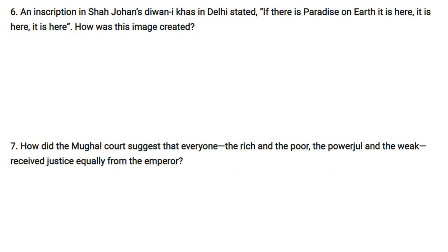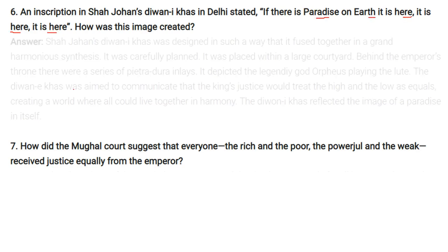An inscription in Shah Jahan's Diwan-i-Khas in Delhi stated: 'If there is a paradise on earth, it is here, it is here, it is here.' This image was created because the Diwan-i-Khas was designed in a grand harmonious synthesis, carefully planned and placed within a large courtyard behind the emperor's throne. There were a series of Pietra Dura inlays depicting the legend of the god Orpheus playing the lute. The Diwan-i-Khas aimed to communicate that the king's justice would treat the high and the low as equals, creating a world where all could live in harmony — reflecting the image of paradise itself.